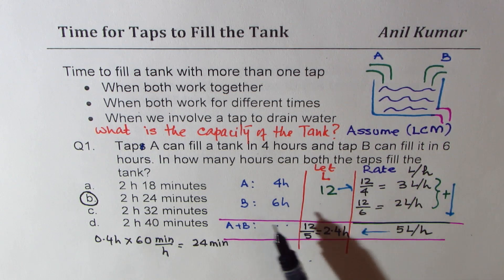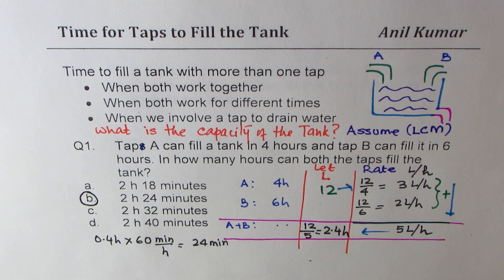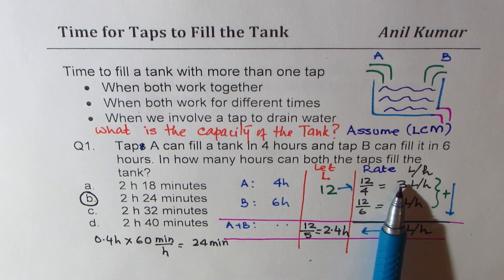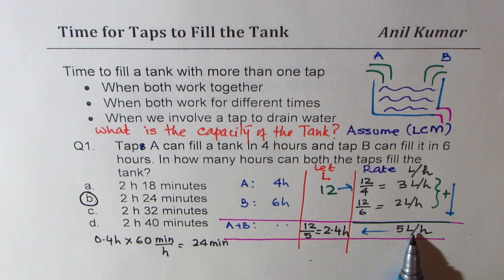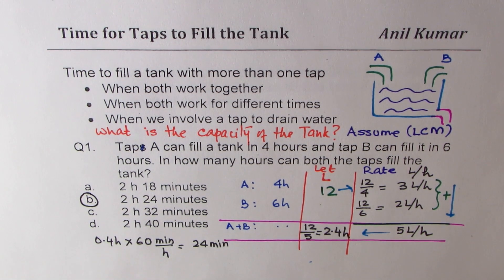You could also assume 24 and get the same result — it's just the rate that matters. So the steps are: find the LCM (12), divide by each time to get rates (3 and 2), combine rates (5 liters/hr), divide capacity by combined rate (12 ÷ 5 = 2.4 hours), then convert to minutes. Simple, neat, and straightforward. This method works for any 'work done' problem — painting a house, repairing, whatever.